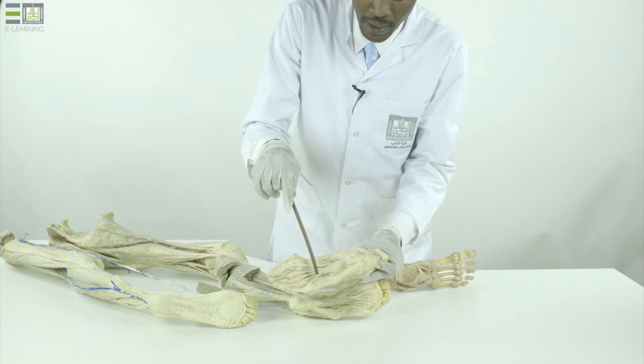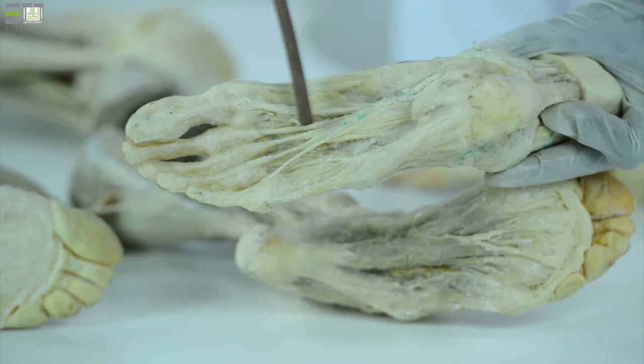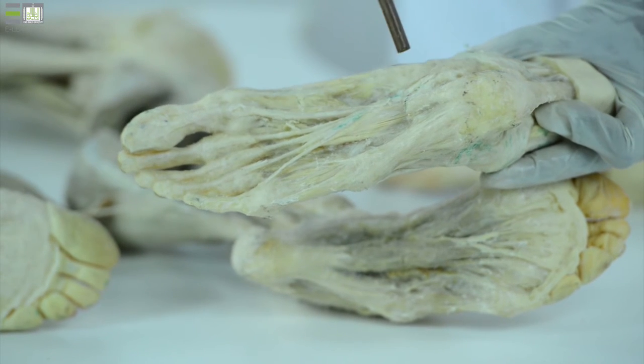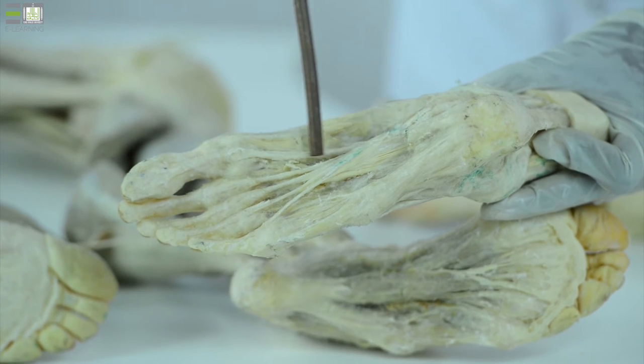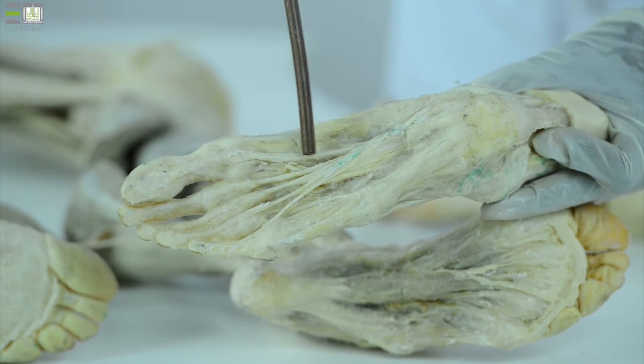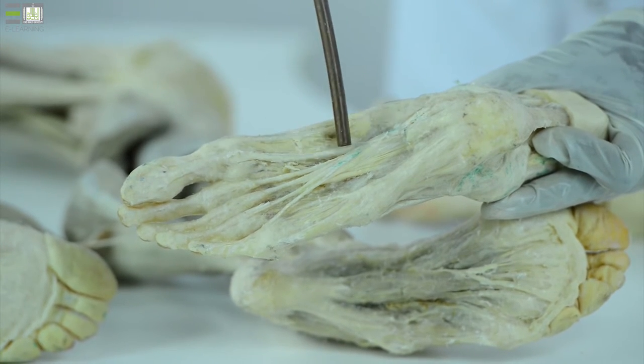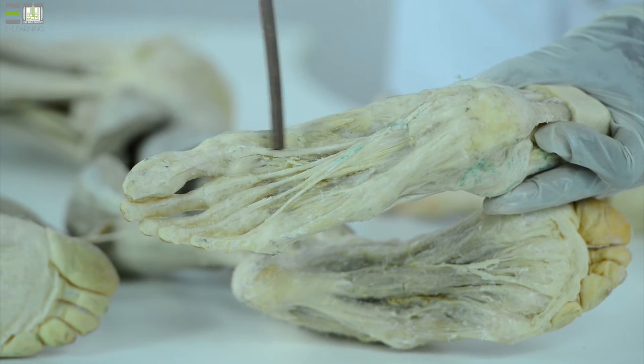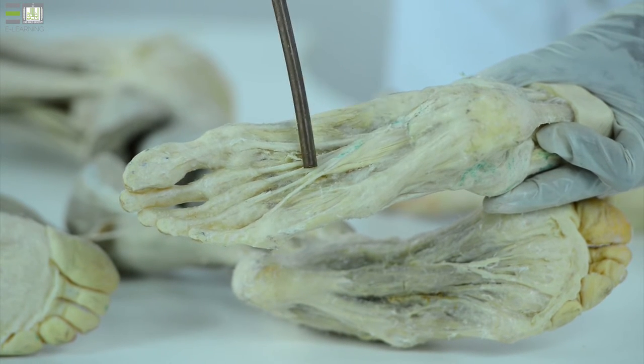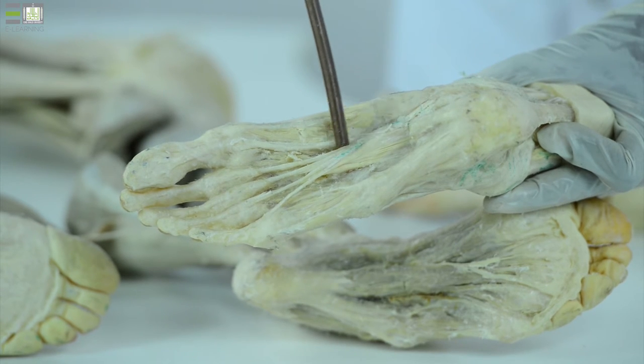The second layer: there are long tendons coming from the leg. This is the tendon of flexor hallucis longus, it comes from the deep compartment of the back of the leg. This is the tendon of the flexor digitorum longus.